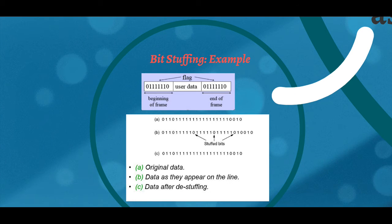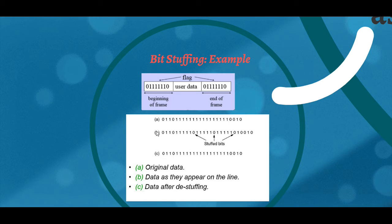Let's see an example of bit stuffing. In the first figure we can see a special pattern: zero followed by six ones and zero, used to denote the beginning and end of a frame. In the second figure we have three bit streams. The first bit stream is the original data, the second bit stream is the stuffed data, and the third one is the destuffed data.